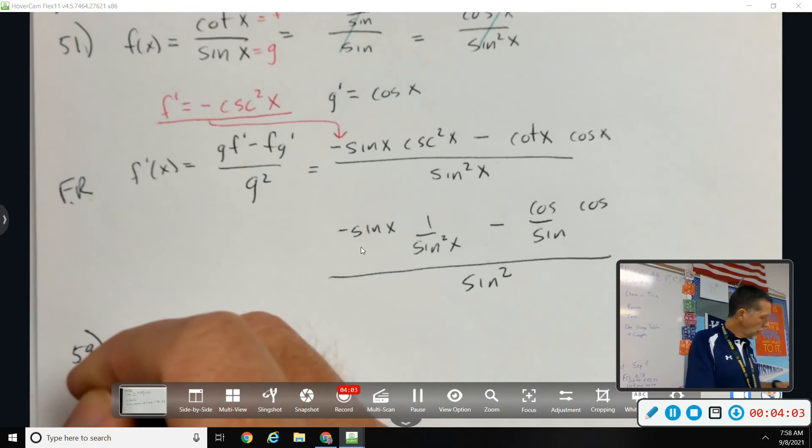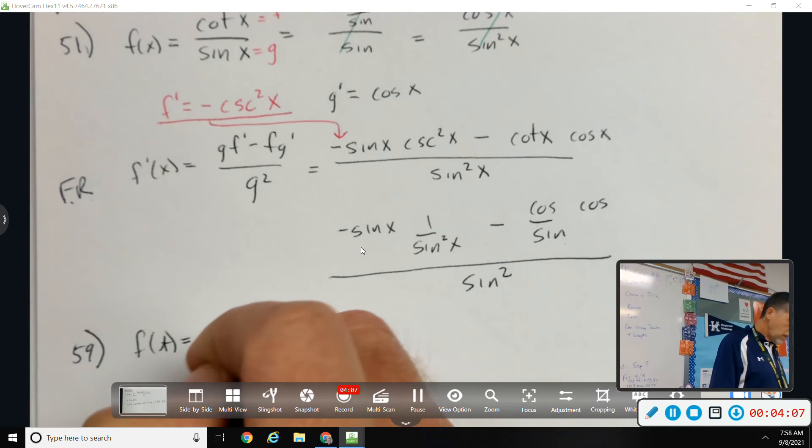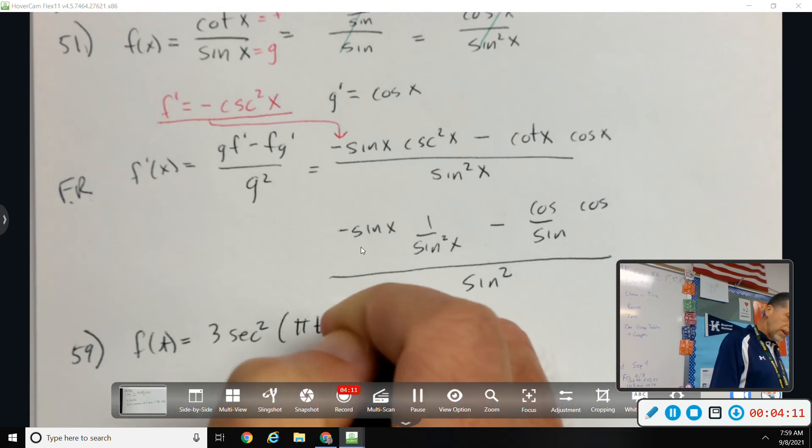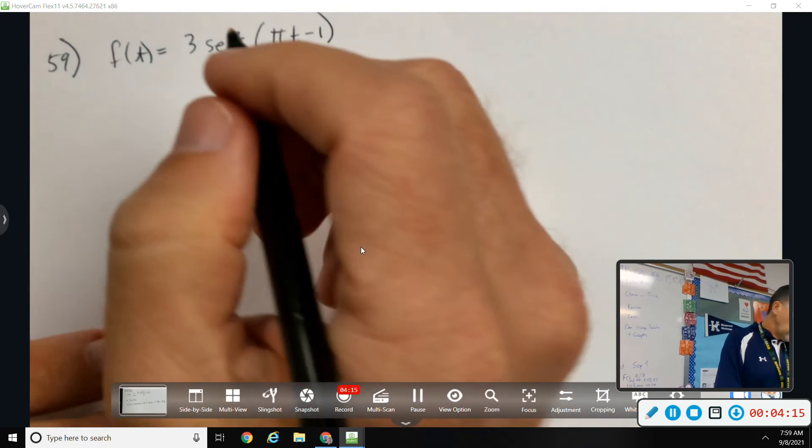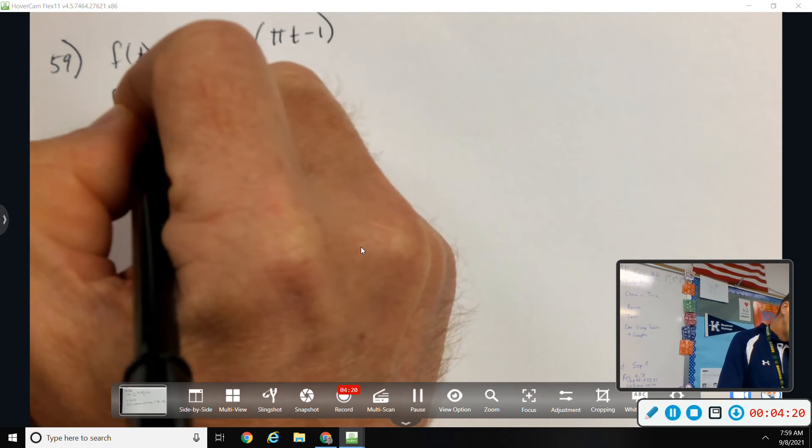59. F of t, 3, a secant squared, pi t minus 1. Directions, find the derivative. Okay.